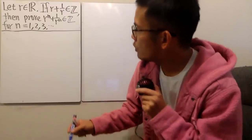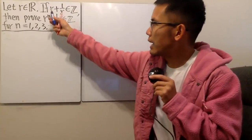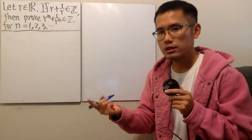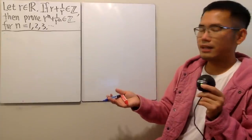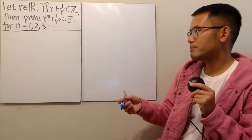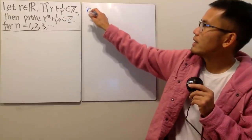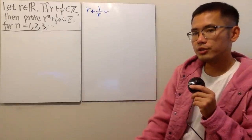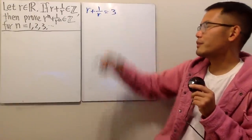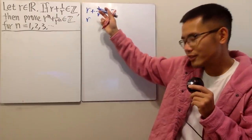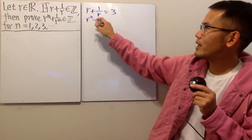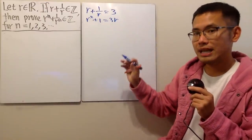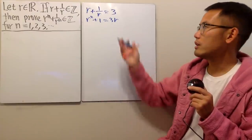Before we start the proof, maybe you are wondering: is it really possible to have r plus 1 over r being an integer? Well, of course, you can just have r equal to 1. But if you don't want obvious situations, you can do the following: just go ahead and put down r plus 1 over r, pick your favorite integer — let's say 3 — and go ahead and solve this quadratic. After you multiply everybody by r, you have r squared plus 1 equal to 3r.